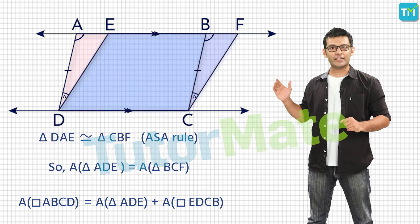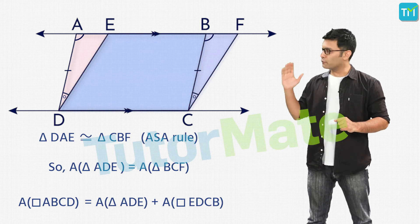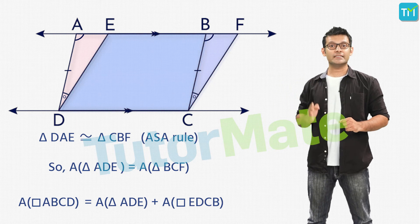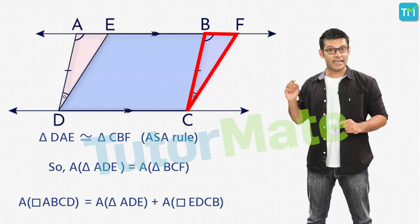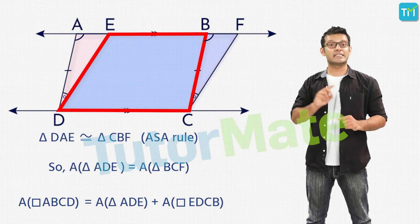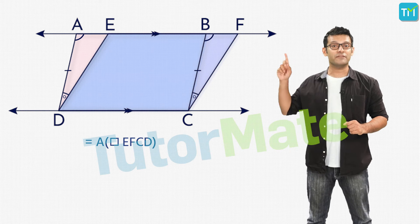Now look at the RHS of this expression. From the figure we can clearly see the sum of the area of BCF and EBCD is nothing but the area of EFCD.